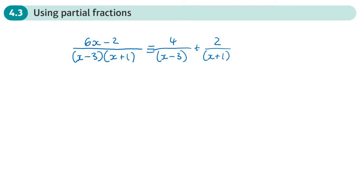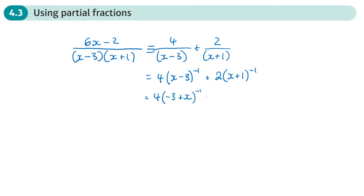If we rewrite those two partial fractions as four times (x minus 3) to the power negative one, plus two times (x plus 1) to the power negative one, and flip the brackets around to get four(negative 3 plus x) plus two(1 plus x), we can now do the binomial expansion on those parts.